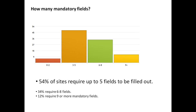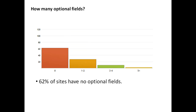There are certain fields which you will want to make mandatory. It is well known that the more mandatory fields you add to a form, the fewer the submissions. It turns out that 54% of popular websites require up to 5 fields to be filled out, while only 12% require 9 or more fields. As for optional fields, 62% of websites have no optional fields.